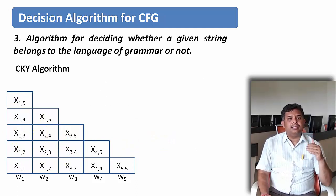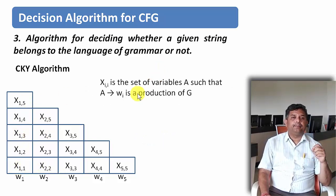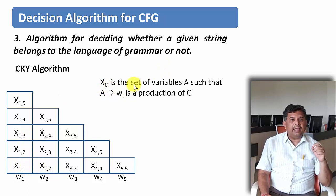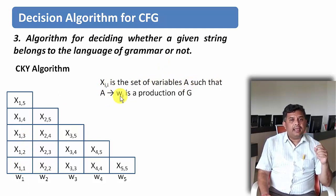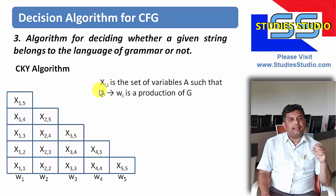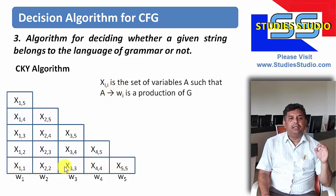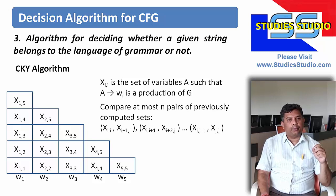This table is useful only for a string of length 5. The next thing is how to fill the X_ij data. X_ii is the set of variables A such that A derives W_i as a production in grammar G. So wherever X_ii appears — that is X11, X22, X33, X44, X55 — this is how we fill the bottom-most row.